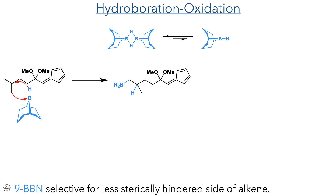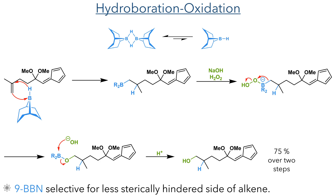This compound was then taken forward to a hydroboration reaction. They used 9-BBN, which is a sterically hindered borane that selectively adds to the terminal alkene, with the boron moiety adding to the less sterically hindered side. This was then oxidized using sodium hydroxide and hydrogen peroxide.